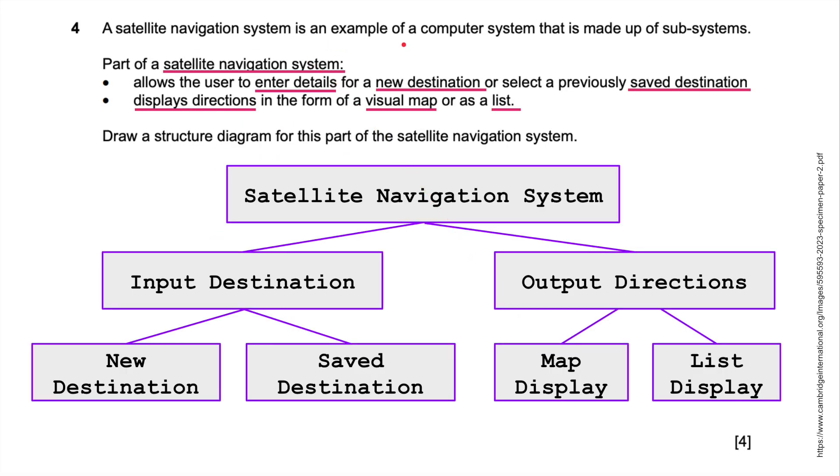A satellite navigation system is an example of a computer system made up of subsystems. I'm going to break this down. Part of a satellite navigation system allows us to enter details for a new destination or selected from a previously saved destination. So I've got satellite navigation system, input details, new destination or saved destination. And then it's also going to display, basically output, the directions. Output directions in the form of a map display or a list display. That's how I would do a top-down subsystem structure diagram of this satellite navigation system.